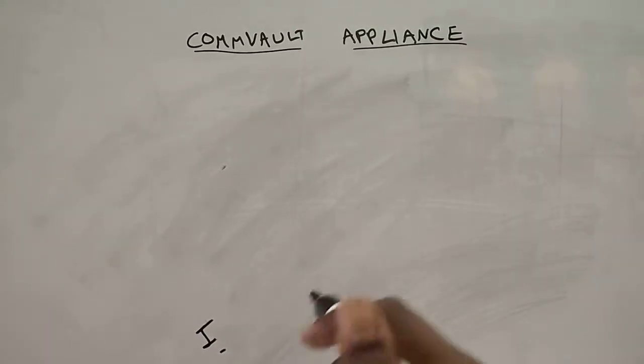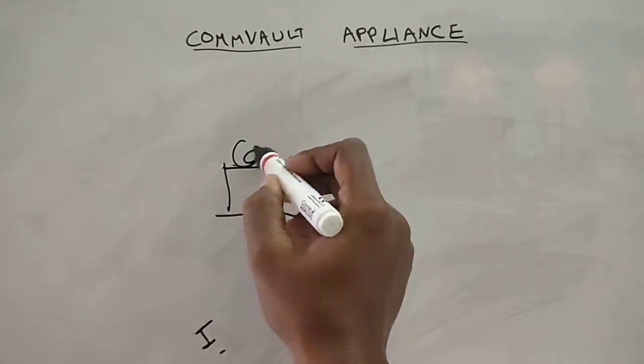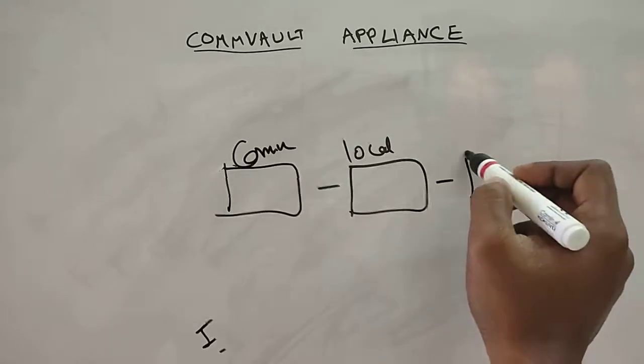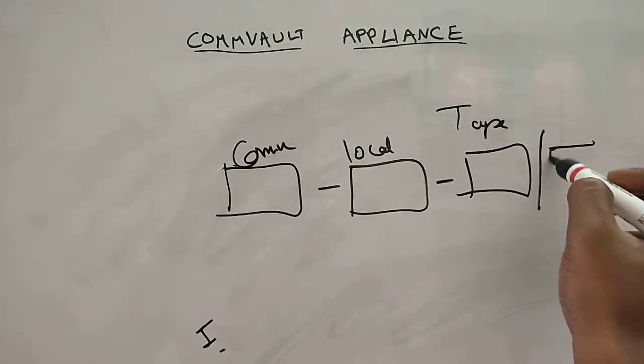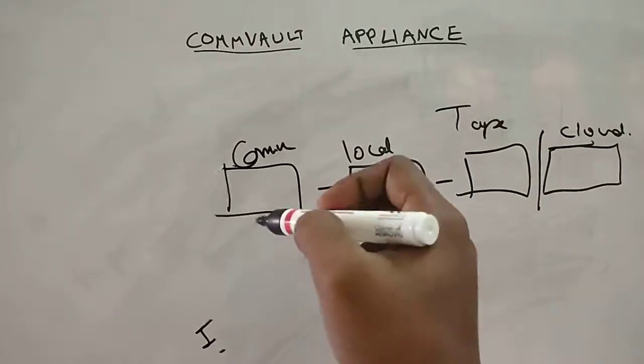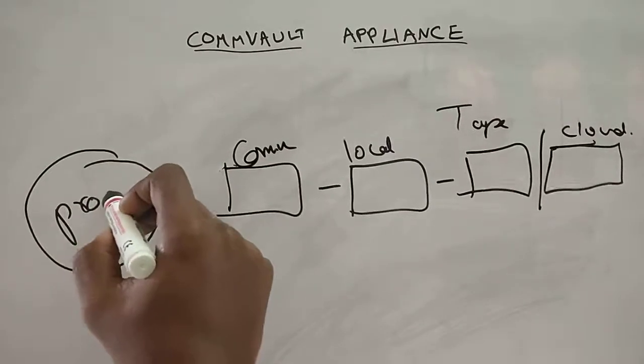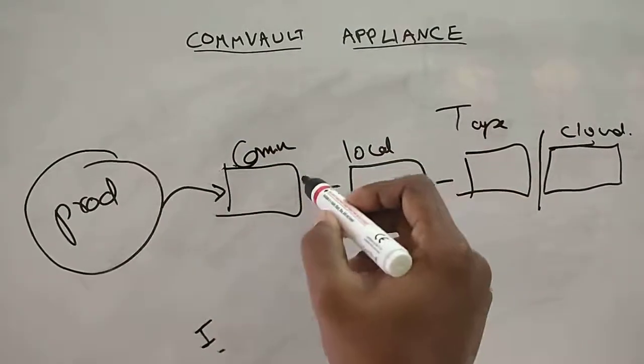I explained in another video. Tiering is nothing but you will have data in your CommServe and then your local storage and then your tape or cloud. Whenever there is a restore request, the restore request will come here. A prod server, let's say this is a prod server, we take the backup here and from here it will go there and from here it will go here.